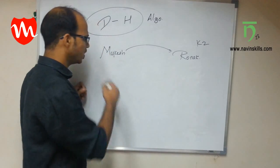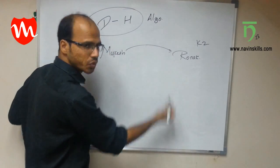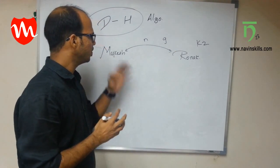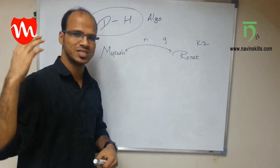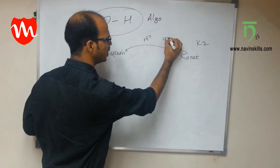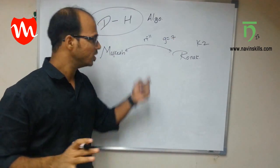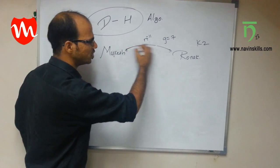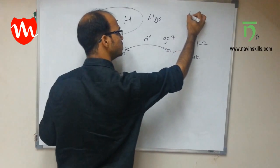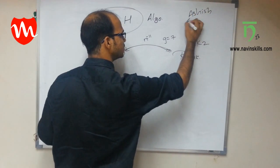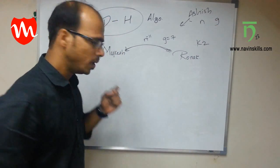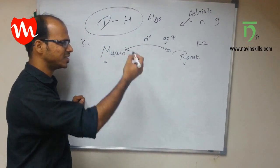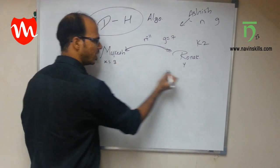The first step is that Mukesh and Ronak agree on two public numbers, n and g, over an insecure network. They choose n = 11 and g = 7. Even if Ashish intercepts these, it's fine — n and g are public. Next, Mukesh privately selects a secret number x = 3, and Ronak privately selects a secret number y = 6. Ashish does not know x or y.